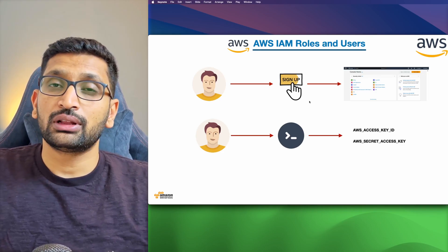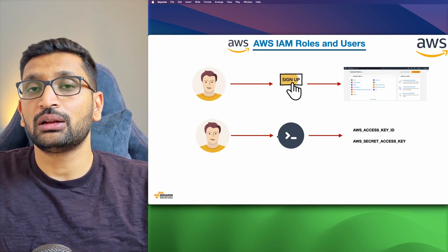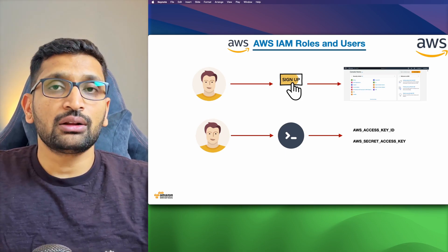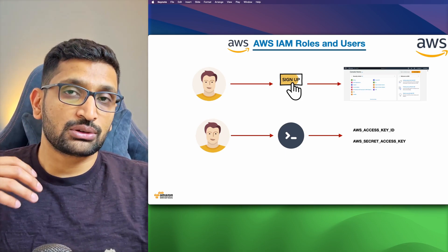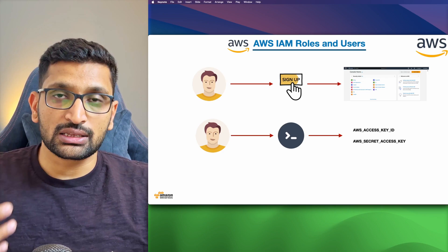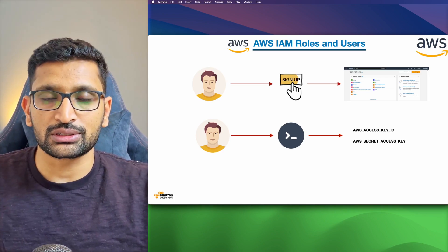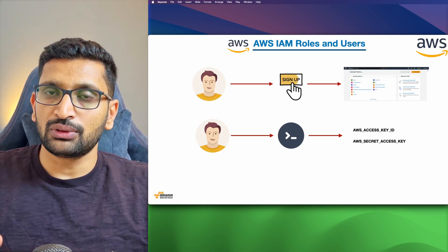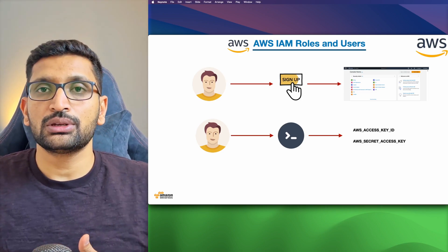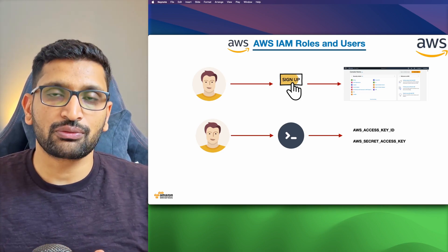So we have done the signup, and we have seen how to get the AWS credentials for command line interface access. Later I will show you how to use the AWS CLI with those credentials to access your AWS services. As of now, we have done the signup, we are able to access the AWS console, and we are also able to access our credentials from AWS.